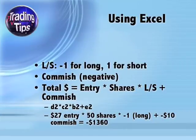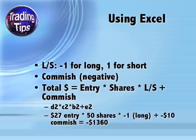For each entry in rows two and beyond, put a negative one in the L/S column (column B) for a long position, and a one in the column for a short position. This sets up the formulas so they will work whether your trade is long or short. When entering the commission in column E, enter it as a negative number.